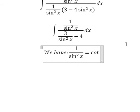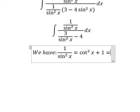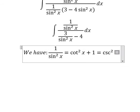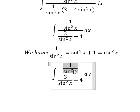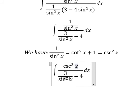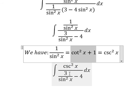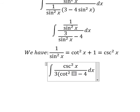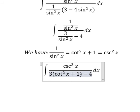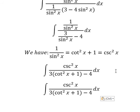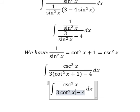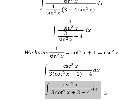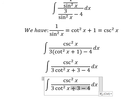We have 1 over sin²(x) equals cot²(x) plus 1, and that equals csc²(x). So we change 1 over sin²(x) for csc²(x). This gives us 3·cot²(x) plus 3 minus 4, and 3 minus 4 gives us negative 1. So we have 3cot²(x) minus 1.